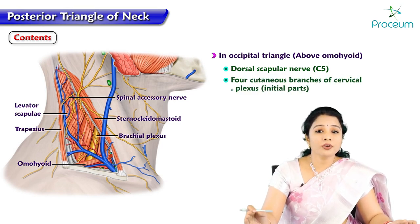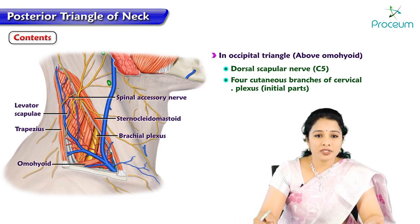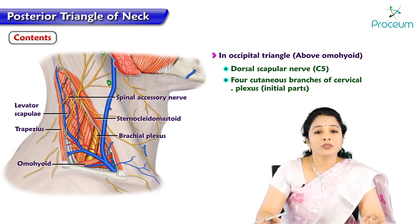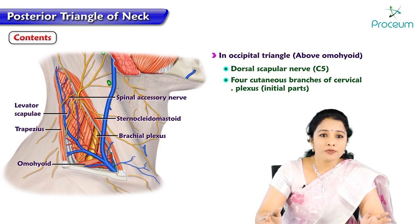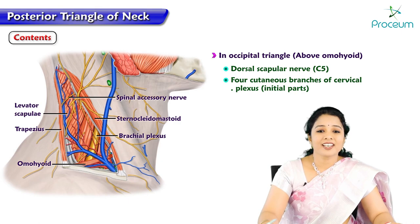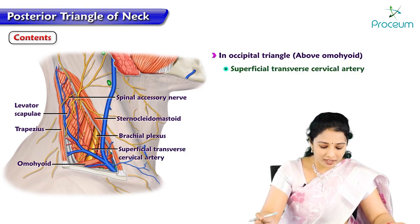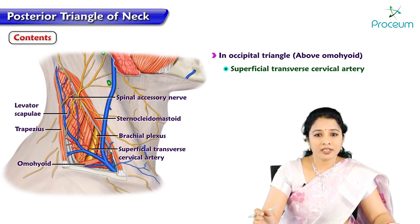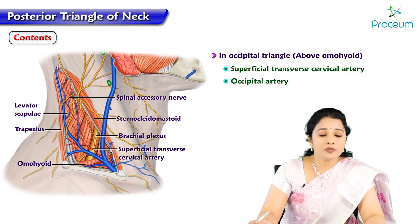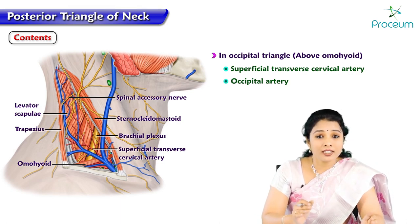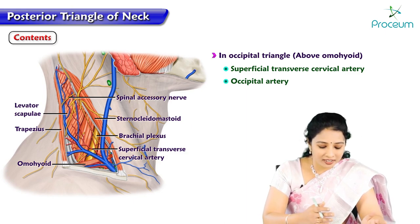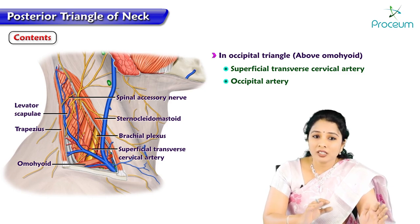The four cutaneous branches of the cervical plexus, with root values C2 to C5, are also contents of the occipital triangle, along with the superficial transverse cervical artery with accompanying cervical veins, and the occipital artery — a branch of the external carotid artery. The occipital triangle is considered a care-free triangle, as no major structures are present there.